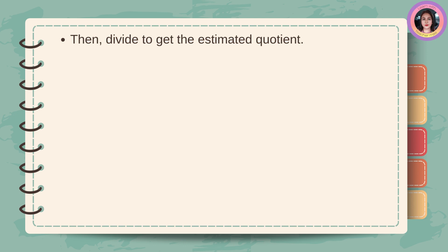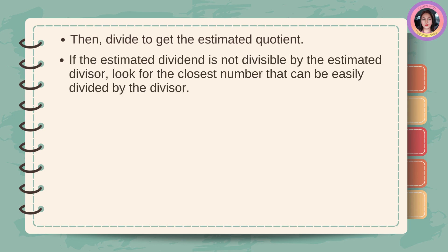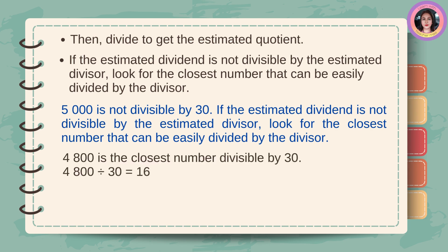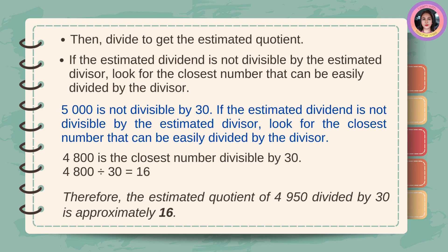Then, divide to get the estimated quotient. If the estimated dividend is not divisible by the estimated divisor, look for the closest number that can be easily divided by the divisor. 4,800 is the closest number that can be easily divided by 30. 4,800 divided by 30 is equal to 160. Therefore, the estimated quotient of 4,950 divided by 30 is approximately 160.